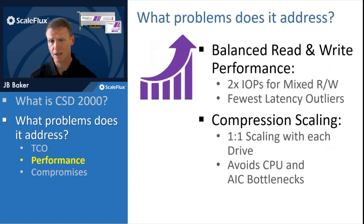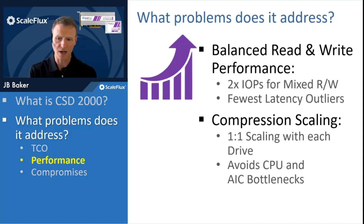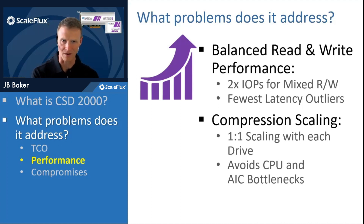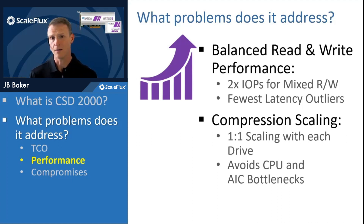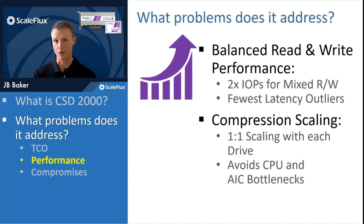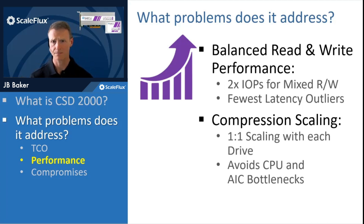The compression being in the drive also facilitates scaling of your performance. Every drive we add also adds the compression engine — adding that throughput or IOPS level of compression — avoiding the bottlenecks that you would ordinarily see when you try to do compression on your CPUs, or even with an offload card where you can get choked by the PCIe bus.